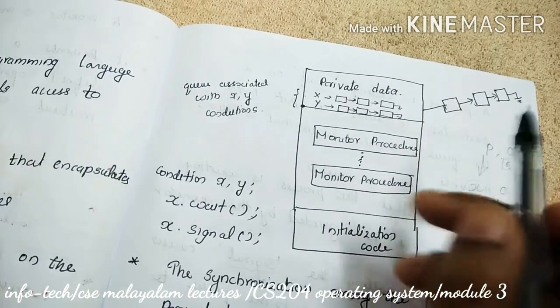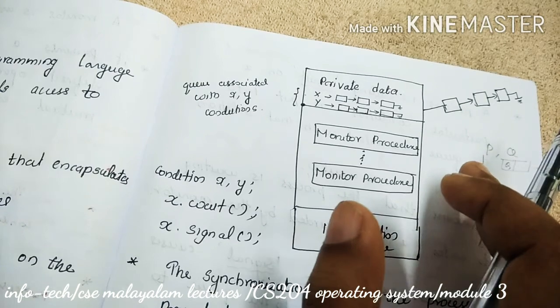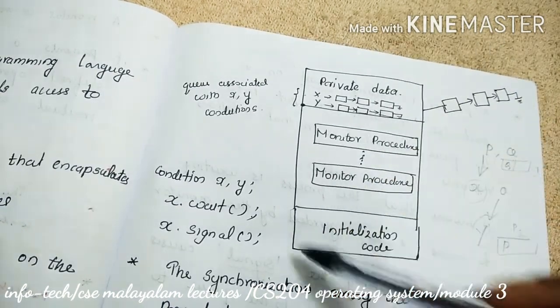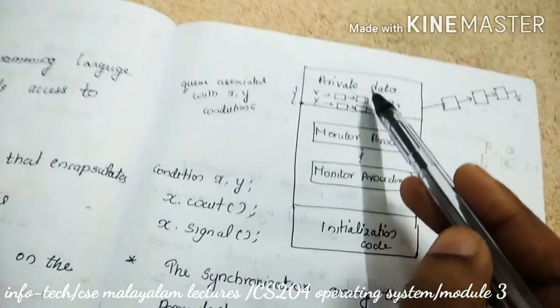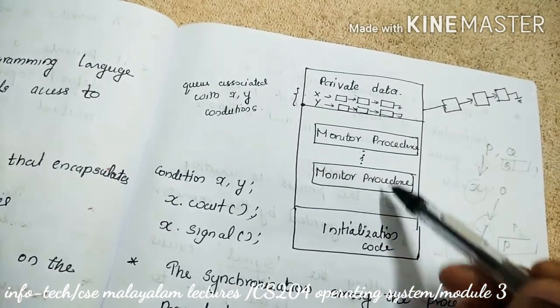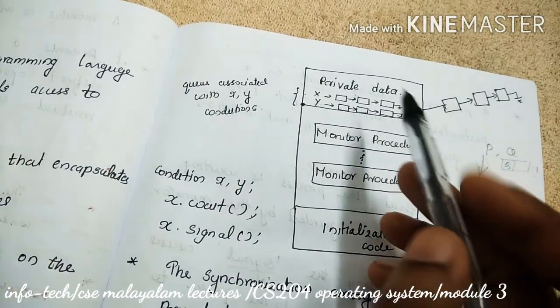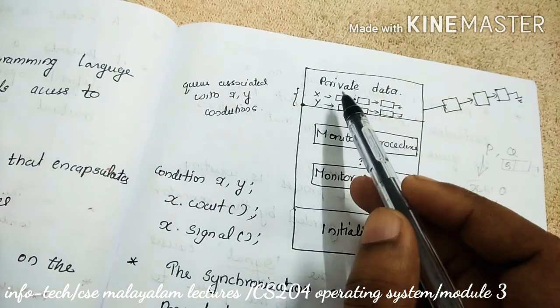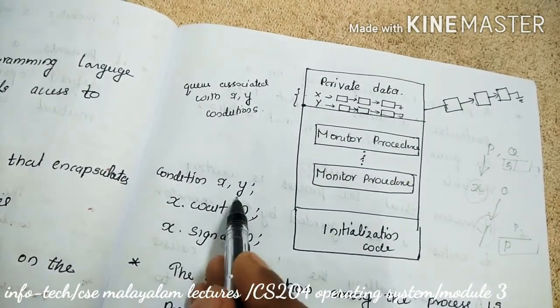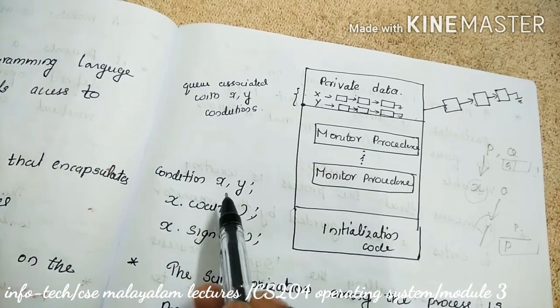So in the monitor concept structure, this is the monitor. This is the private data in the monitor, and here are some procedures. This is the initialization part. In monitors, there contains the condition variables, and the syntax for the condition variable is condition x comma y.